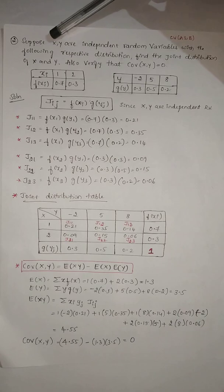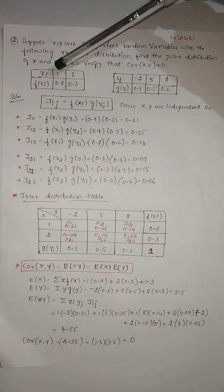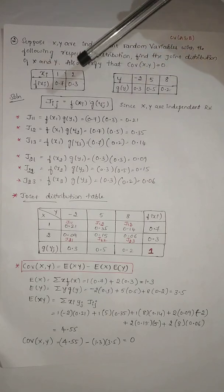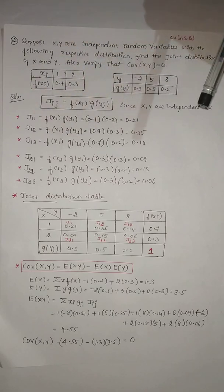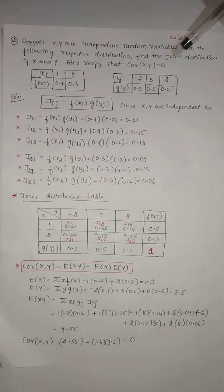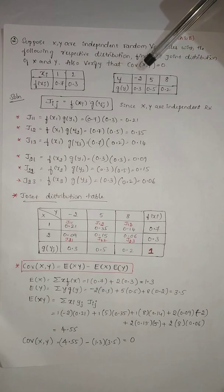In the problem, x and y are given as independent random variables. They have given the distribution of x and distribution of y, and we need to find out the joint distribution of x and y. In the previous video, you saw how to write distributions of x and y from a joint distribution. Here, they have given distributions of x and y and are asking to write the joint distribution, and also to verify whether covariance of x and y is 0 or not.